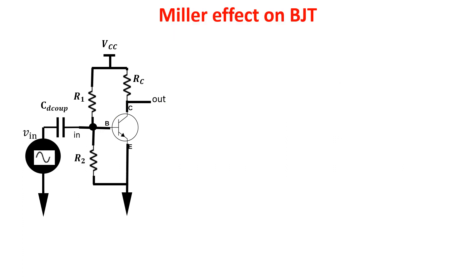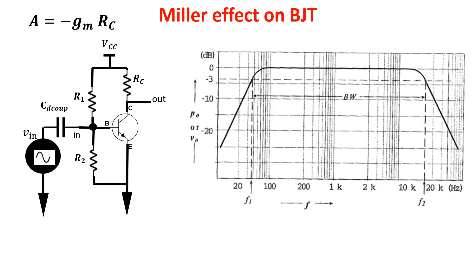An example of Miller effect can be seen in the common emitter configuration. We know it has an inverting gain of minus GM·RC, but this gain remains constant over a middle band of frequencies and falls out at high and low frequencies.